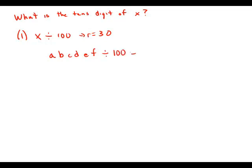We divide by 100. What happens is all the digits from the hundreds place up, that becomes the quotient, a, b, c, d. And the remainder is the last two digits. Whenever you divide by 100, the remainder is whatever was in the tens digit and the ones digit.